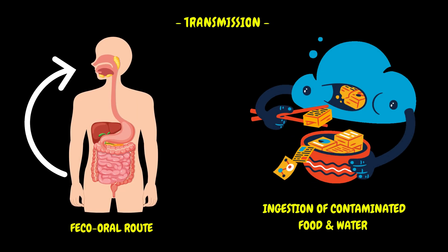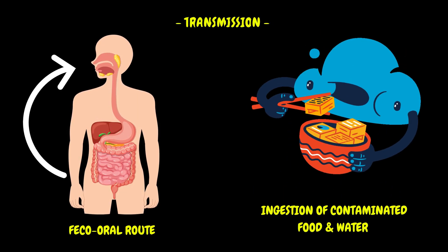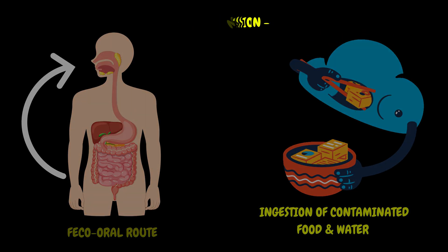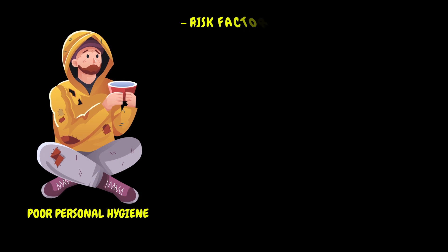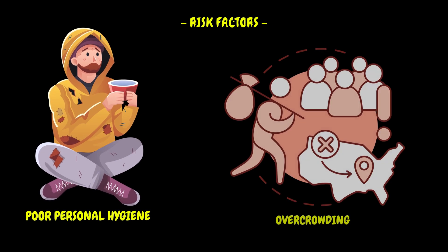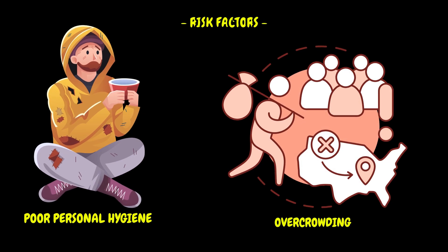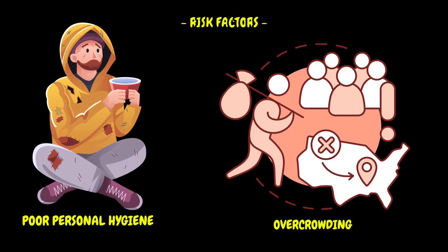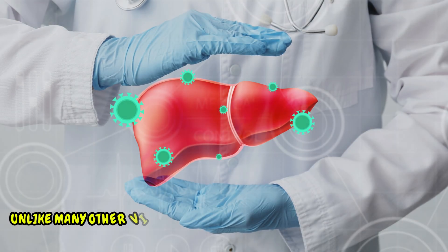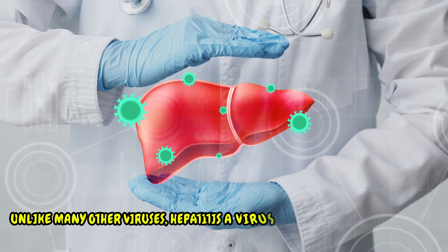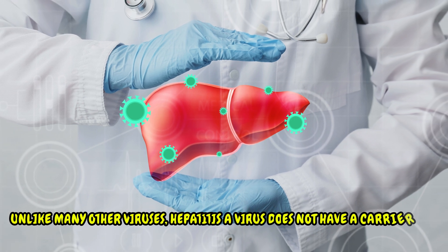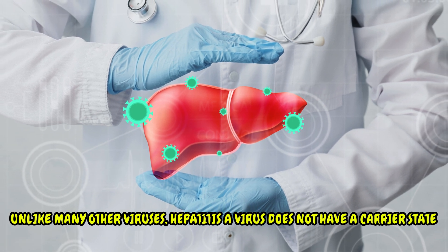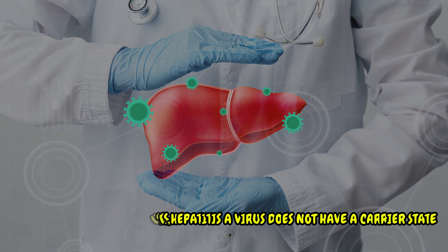The virus is transmitted via the feco-oral route and ingestion of contaminated food and water. Poor personal hygiene and overcrowding are risk factors for getting the infection. Unlike many other viruses, hepatitis A virus does not have a carrier state.